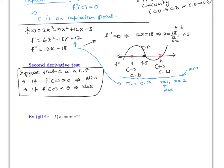And f''(2) = 12(2) - 18 = 6, which is positive — so x = 2 is a minimum, again matching our earlier result. The second derivative test is just another way to confirm whether a critical point is a maximum or minimum.